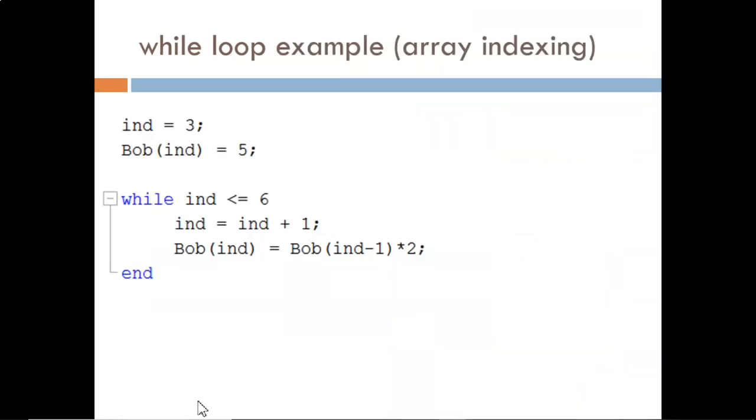Next, we'll examine a slightly more complicated example. This one adds the twist of array indexing, rather than overriding scalars like in the last example. We'll take an overview of the code here, then build the table on the next slide. After the first two commands, what values will BOB hold?